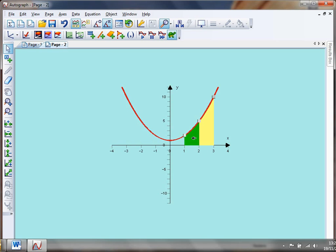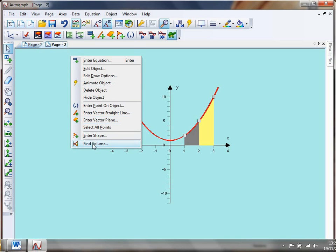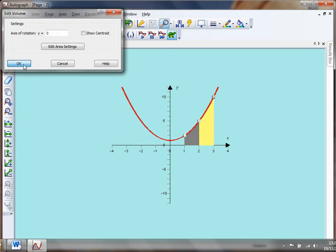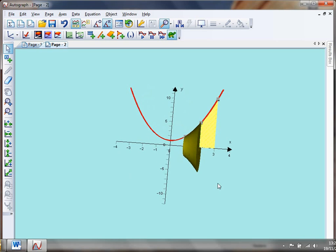Now to find the volume, I need to select that area. So I've clicked it once and it's gone black and if I right click, I get find volume. Yep, y equals naught sounds good. Click OK. And no surprises that that's the shape I've got.